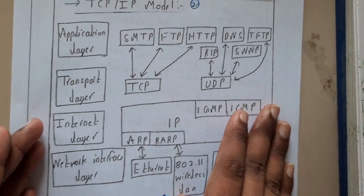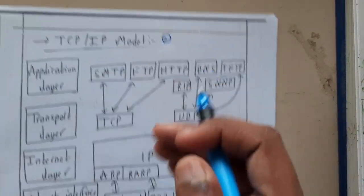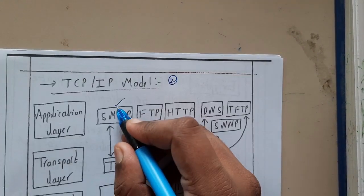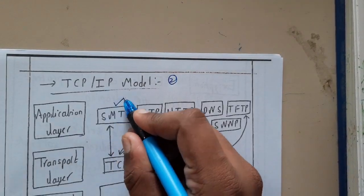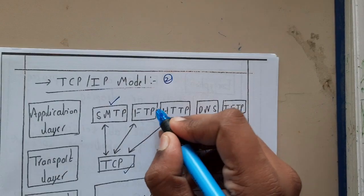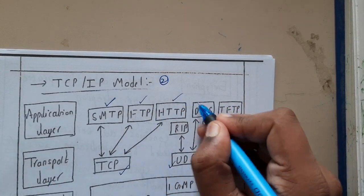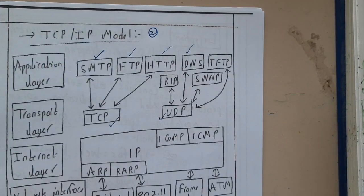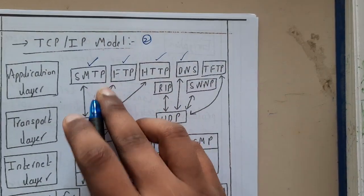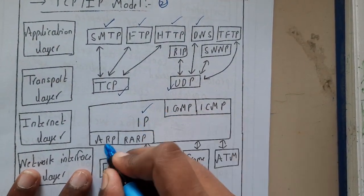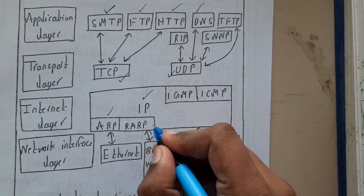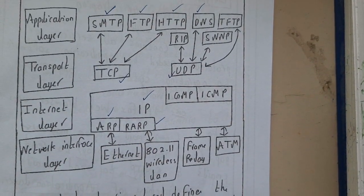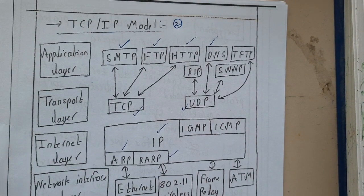We'll be discussing about most of these things — SMTP, TCP, UDP, FTP, HTTP, DNS (Domain Name Servers), SNMP, IP protocols, ARP, and RARP. So these are some of the key protocols we'll cover.